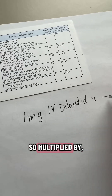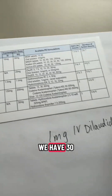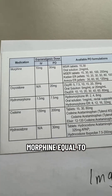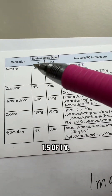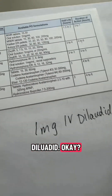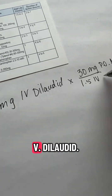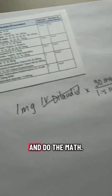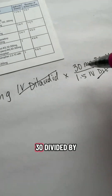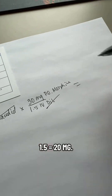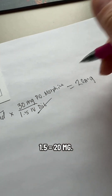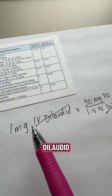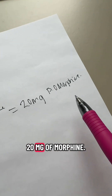We're doing some old-school math here. We have 30 milligrams of oral morphine equal to 1.5 milligrams of IV Dilaudid. So 1.5 IV Dilaudid. We're going to cross off just like we would in algebra and do the math: 1 times 30 divided by 1.5 equals 20 milligrams. And what we're left with is oral morphine. So 1 milligram of IV Dilaudid is equal to 20 milligrams of oral morphine.